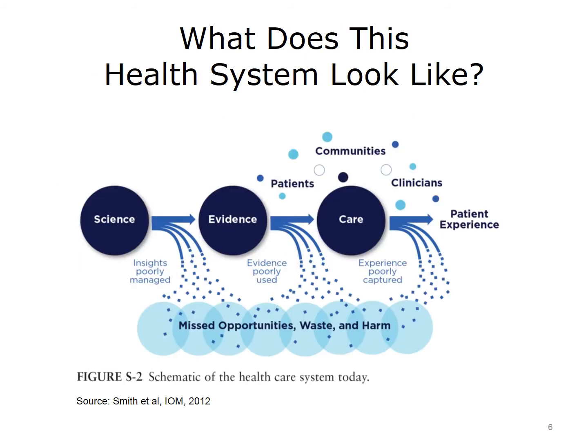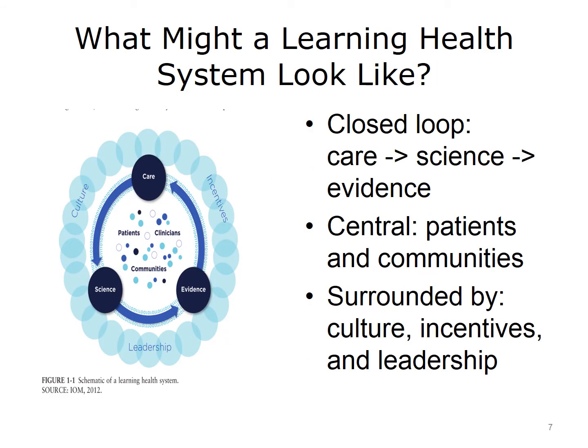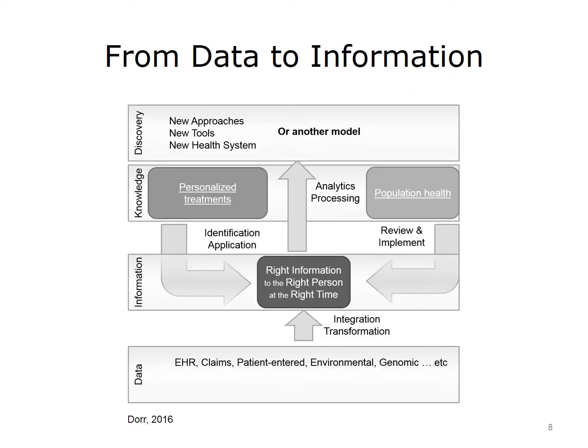Here is a graphic visualization of these issues. We don't apply the insights from science, nor add the evidence to care, nor include patient and family experience and outcomes, leading to significant numbers of missed opportunities, waste, and harm to patients. The Learning Health System intends to address this by creating a closed loop for science and evidence to be included in care, and then for care to generate more knowledge that can be used to further adjust care. Patients and communities are at the center, and culture, incentives, and leadership help provide an environment where this is possible.